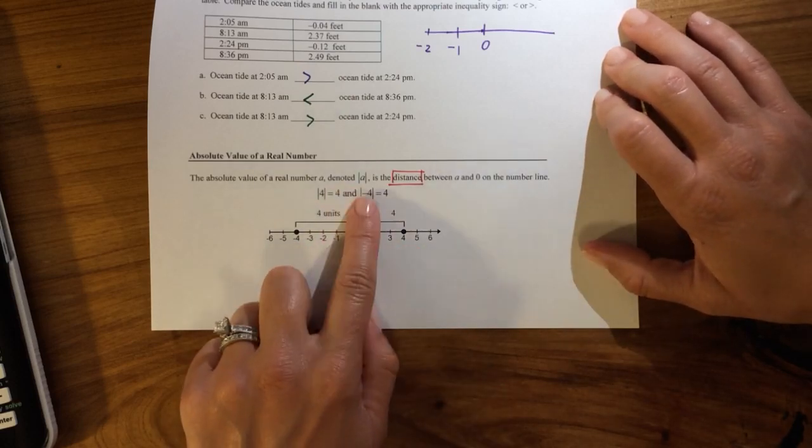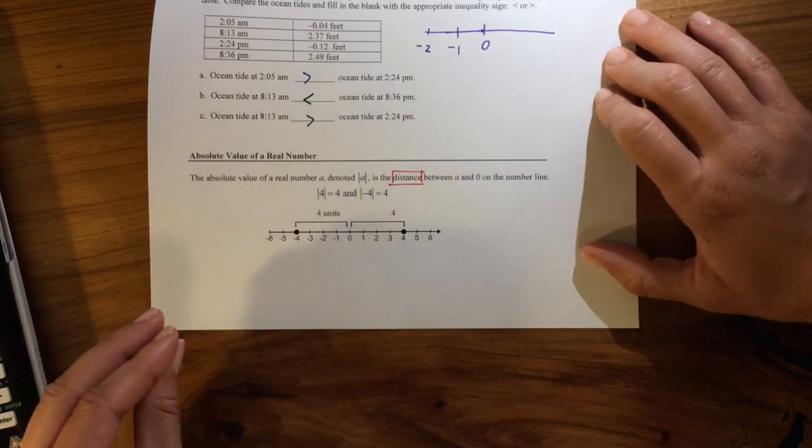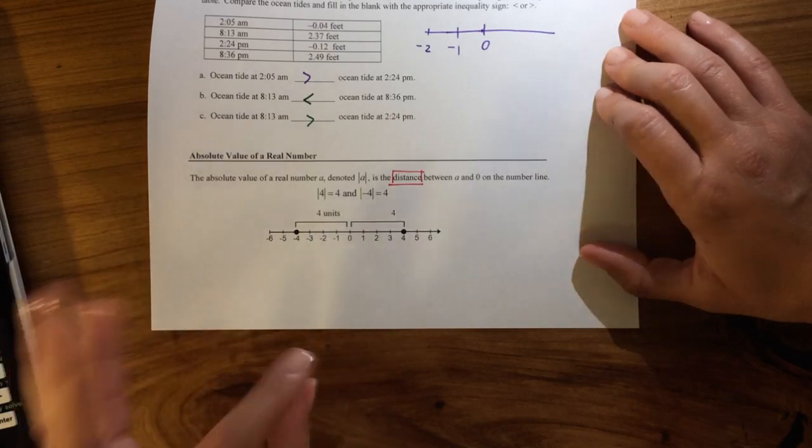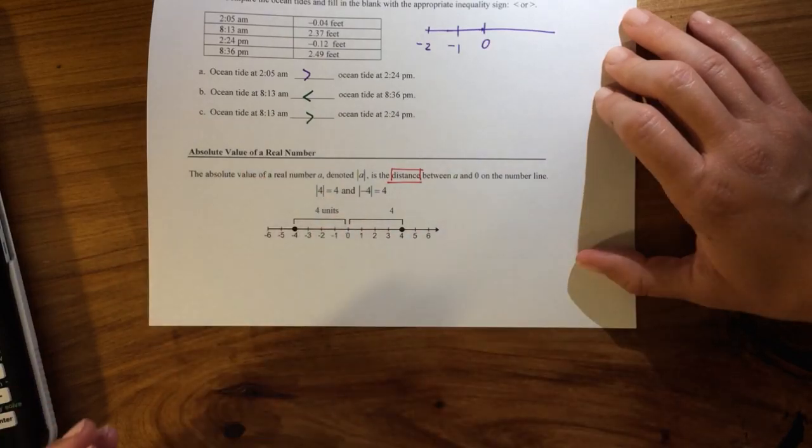So when it comes to absolute value, whenever you read a negative, I really want you to read it as from the left. And if it's positive, kind of read it as from the right.